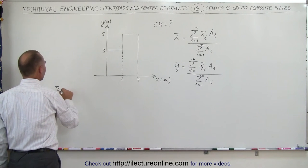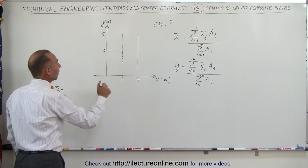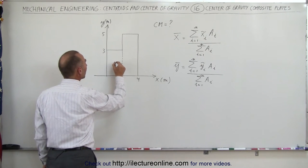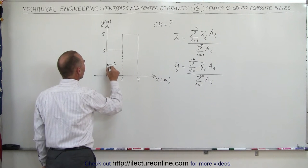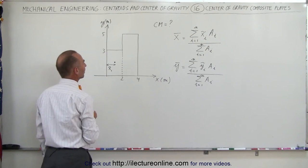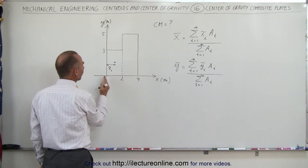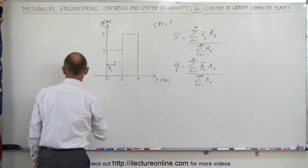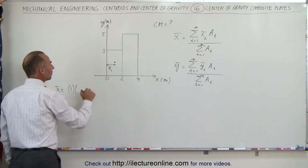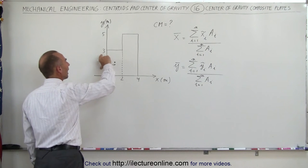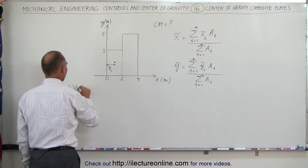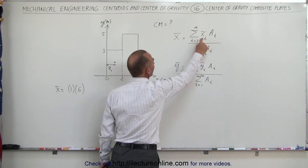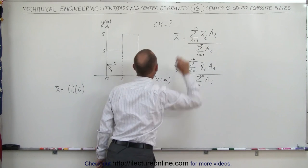The x coordinate is found by summing each piece. The x coordinate of the first piece, x sub 1, is halfway from 0 to 2, which is 1. Times the area of this piece, which has width 2 and height 3, giving an area of 6. So the first product is 1 times 6.